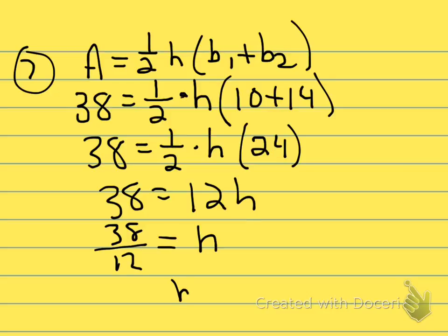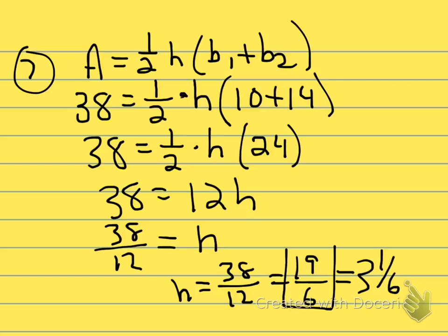You could leave that as 38 over 12. I'd be happier if you reduced it, and that would be the same as 19 over 6. That's 3 and 1 sixth if you like. Although I really like 19 over 6. Great answer. If you approximated to the nearest tenth, and it said you could on this tenth, then you had a height of about 3.2.